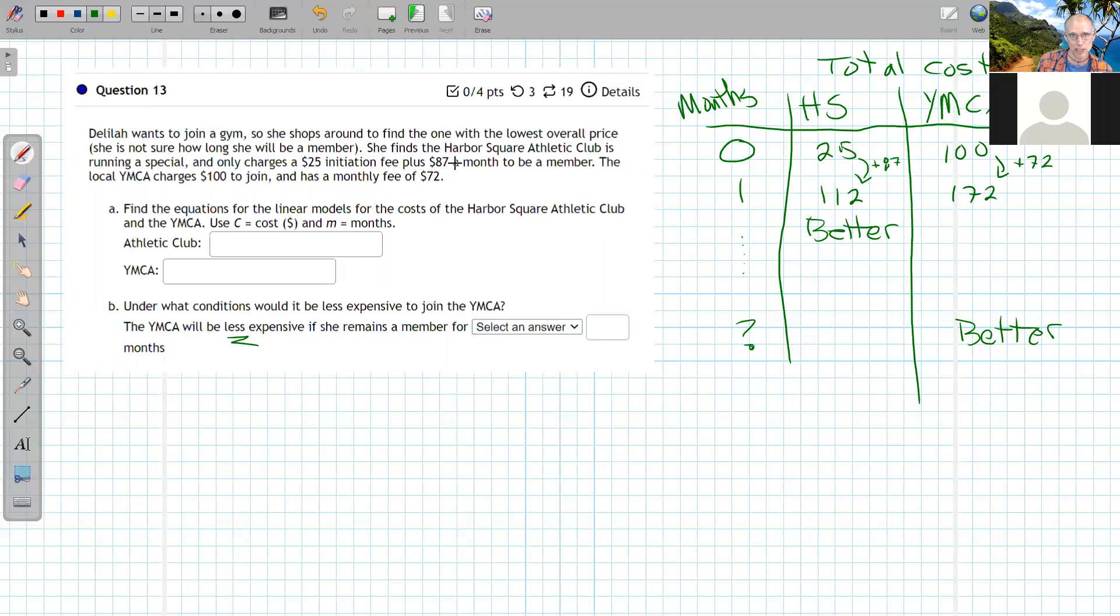When we have dollars per month, those are slopes. In terms of Y = MX + B, I'm given M with the $87 and $72 per month rates. The values of B are the initiation fees, those initial amounts to join. Now I need to write equations.